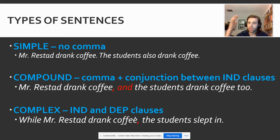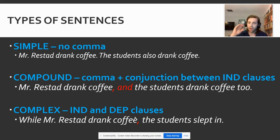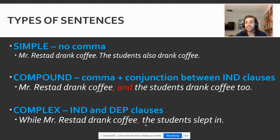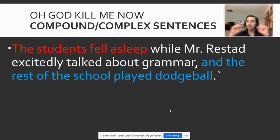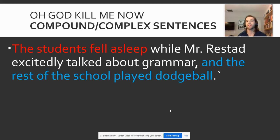The comma rule here is: when the dependent clause — or really anything — comes before that independent clause, separate it with a comma. Because readers deserve that clarity — a little bit of an indication before your main sentence starts. In this case, my main sentence is 'the student slept in.' I wanted to add the information that while Mr. Restad drank coffee, the student slept in — that's my main independent clause. It gets even a little more complicated because you can have compound-complex sentences, meaning two independent clauses — that's what makes it compound — combined with a dependent clause, which makes it complex.